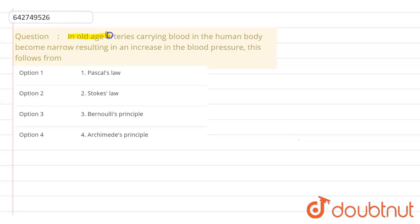In this question it says that in old age, arteries carrying blood in the human body become narrow resulting in an increase in blood pressure. This follows which law or principle? So we know by equation of continuity...